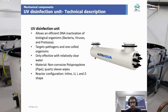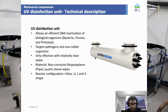Ultraviolet disinfection units are used to disinfect water from different kinds of pathogens. UV units allow efficient DNA inactivation of biological organisms such as bacteria, viruses and protozoa. Target pathogens are usually single-celled organisms. This device works best with relatively clear water. The material is non-corrosive propylene for the external pipe, with a quartz sleeve inside. The reaction configuration can be of different shapes: U, L and Z shapes.